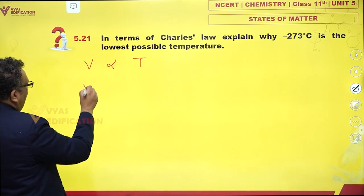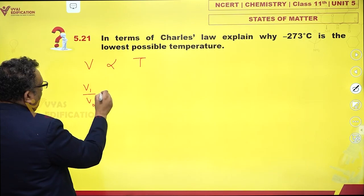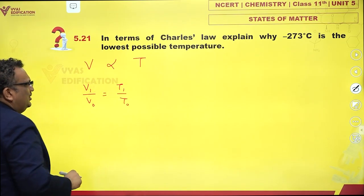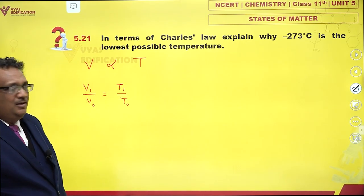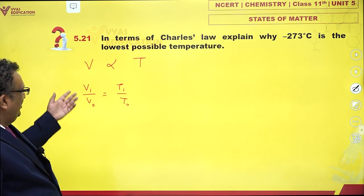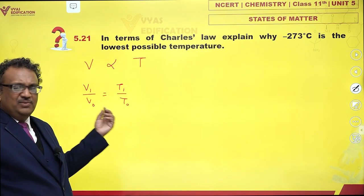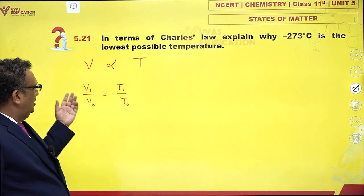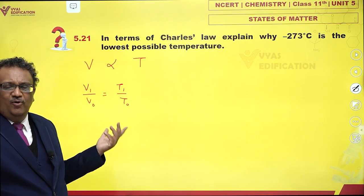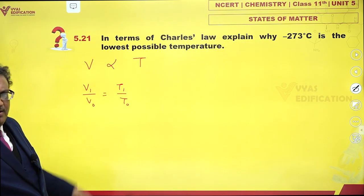So V1 by V0 is T1 by T0, something like this. V0 and T0 are some initial temperature and volume. V1, T1 are final volume and final temperature, or at any other condition as such.